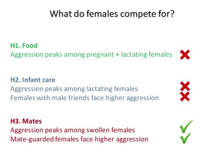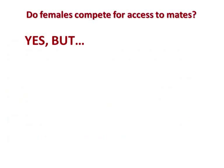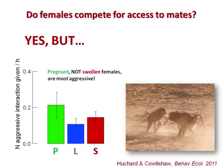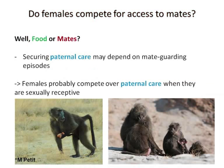So it looks like females do compete for access to mates because they are much more aggressive when sexually receptive. But there's something that needs interpretation: the most aggressive females are not swollen females, as I would expect under the mating-competition hypothesis, but pregnant females. It's a bit confusing. Actually, it's not entirely clear that it's pure mating competition. My interpretation is that they are not primarily competing for food or for mates per se, but for paternal care.